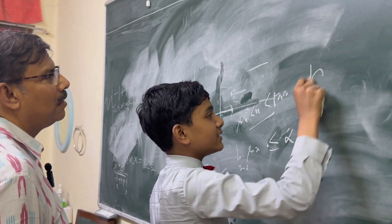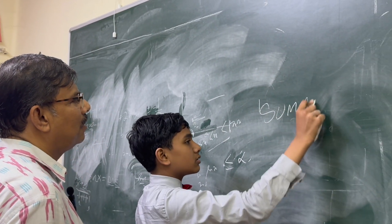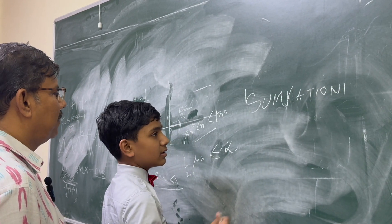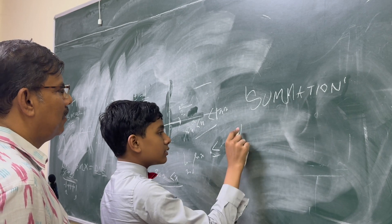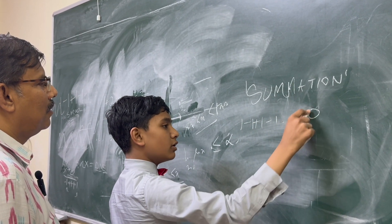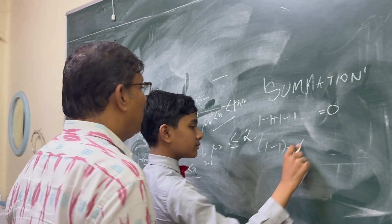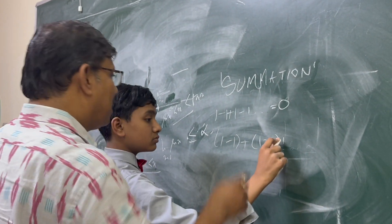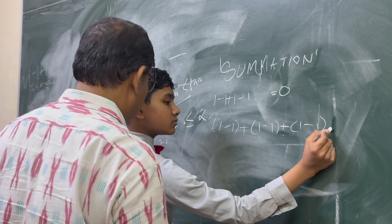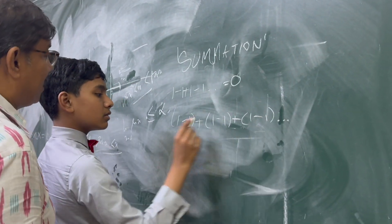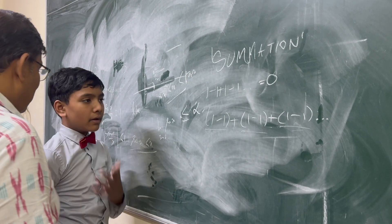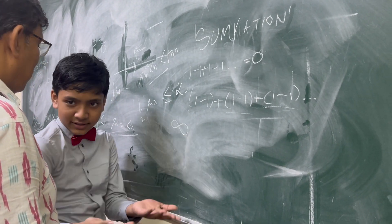We can expand the definition of summation. For example, you could say that 1 minus 1 plus 1 minus 1 is equal to 0 — if the number of terms is even, it equals 0. If you take the even number of terms, that's 0. Odd times it's equal to 1. So that's what this alternating series is. Is infinity even or odd?